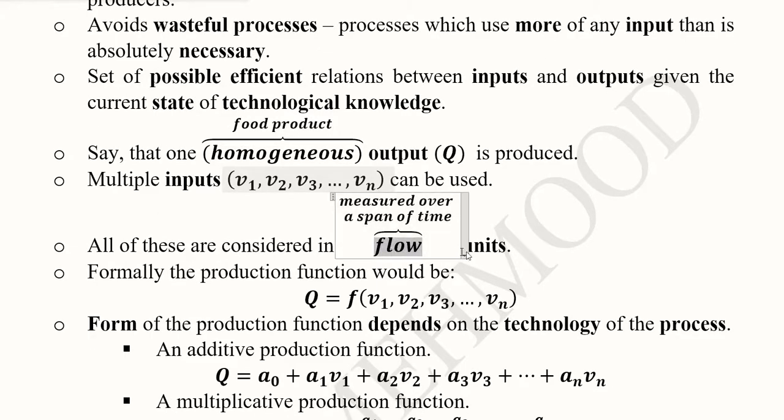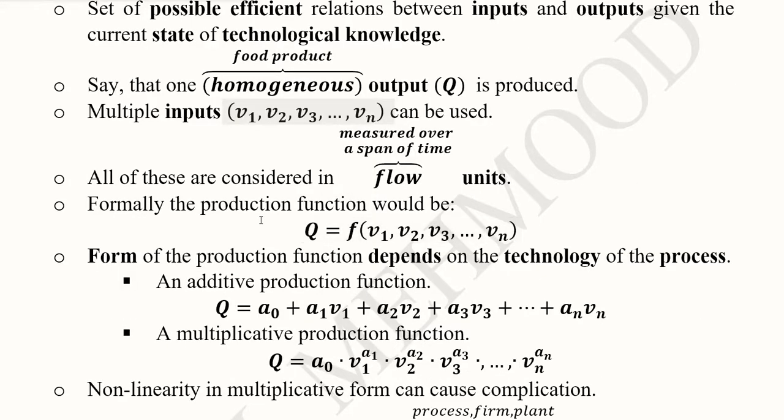All of these are considered in flow units instead of stock units. We say it's a flow manner because we are not taking one value out of the series of values over time. We are measuring the capital, labor, energy, material or output for a certain time period, because output takes some time to get generated. We have a flow variable over a span of time instead of just one point in time. This is another point to note - the nature of the variables.